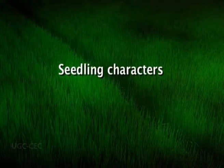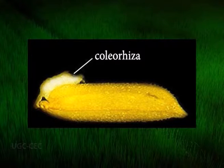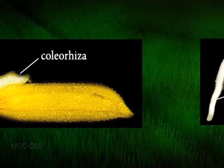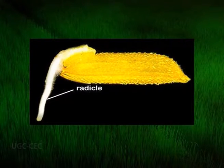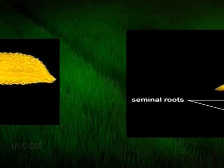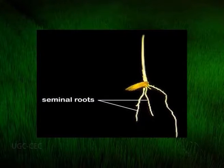Seedling characters: the grains of rice that lack dormancy germinate immediately upon ripening. First, the coleoptile comes out. After this, the radicle breaks through the coleoptile. This is followed by two or more minor roots, all of which develop lateral roots.